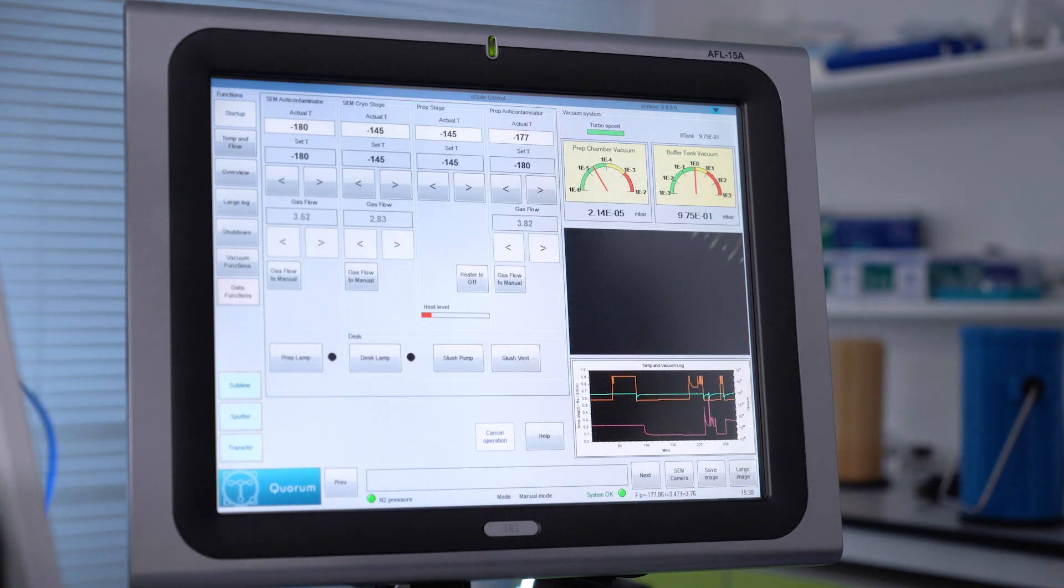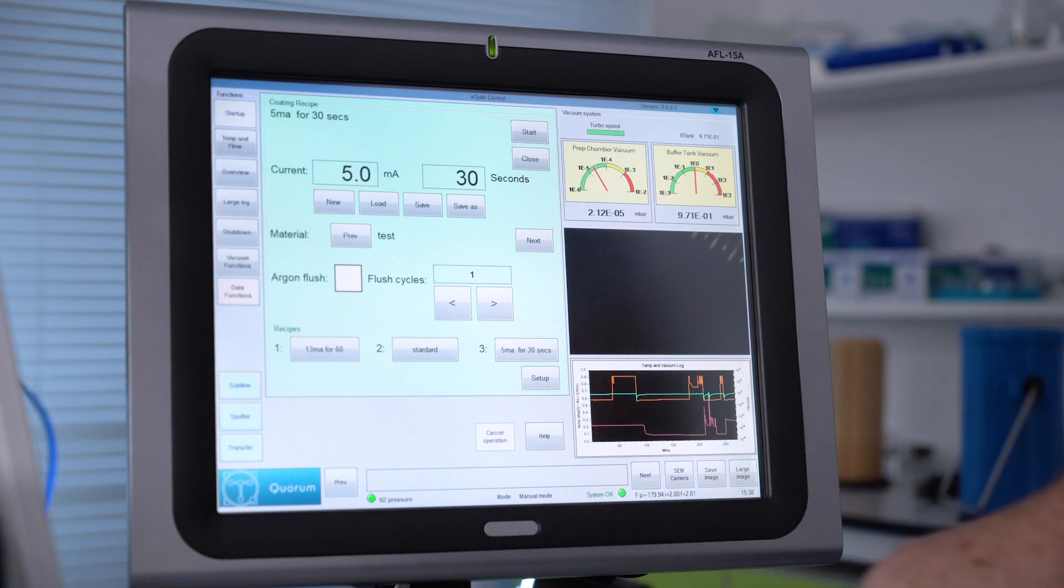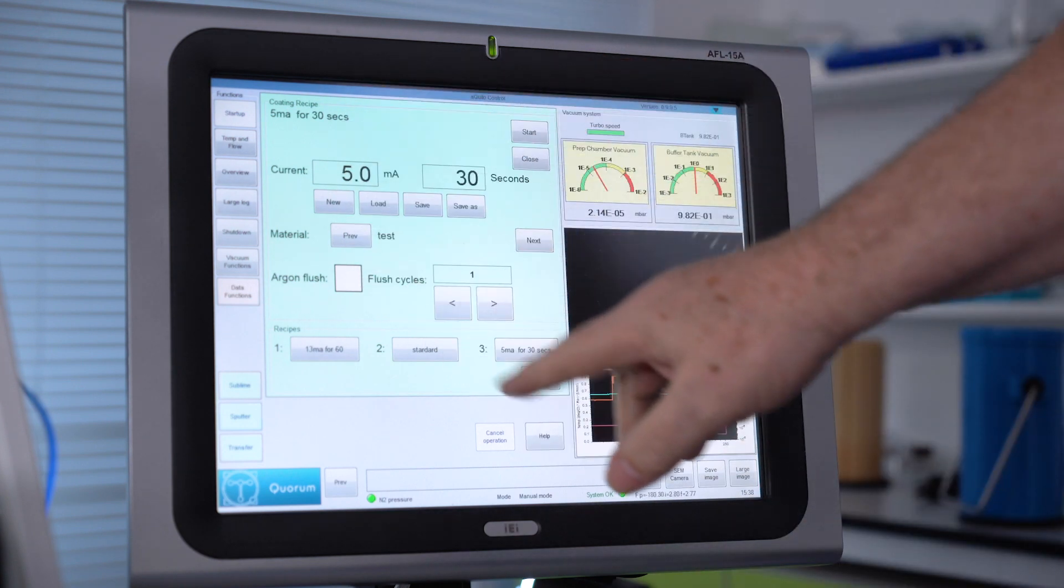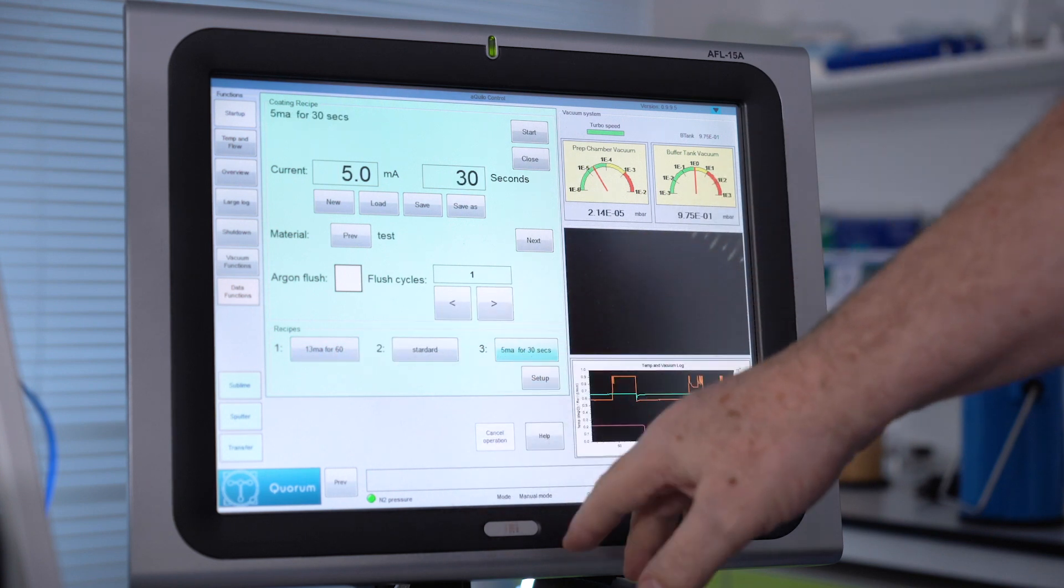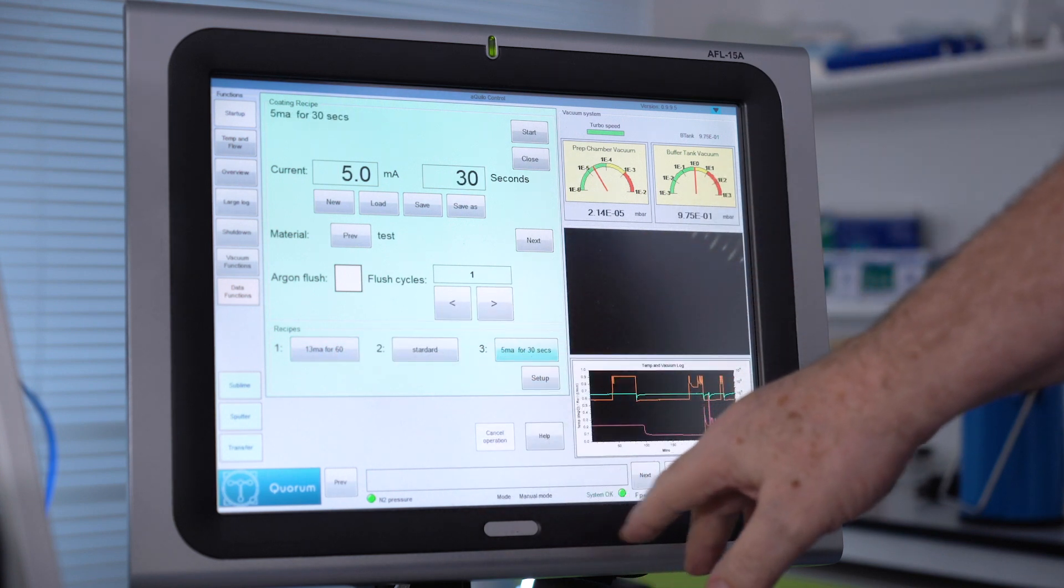Now we've sublimed the sample, we'll go to sputter to coat the sample. Here we see it defaults to the last recipe we used, but we can choose different recipes from these quick choice bars and we're ready to go.